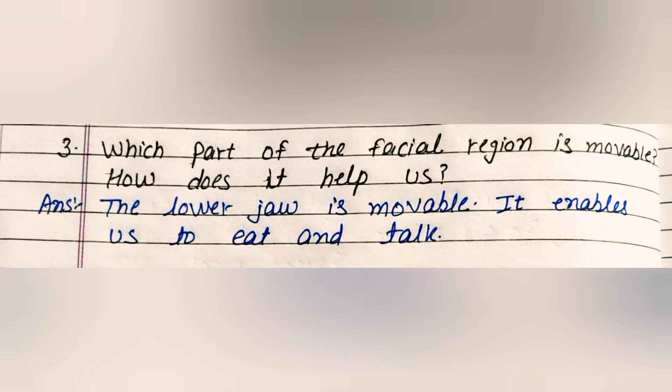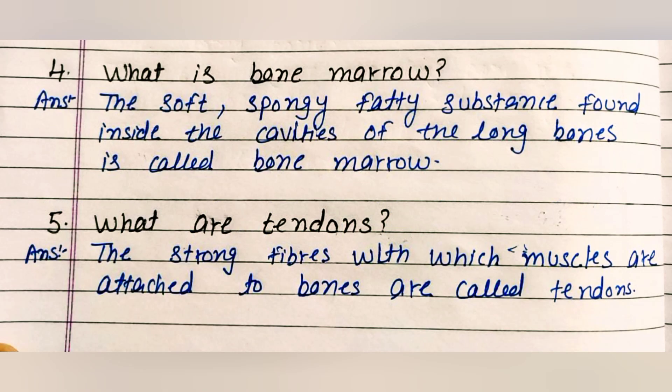Question three: Which part of the facial region is movable and how does it help us? The lower jaw is movable; it enables us to eat and talk. Question four: What is bone marrow? The soft, spongy, fatty substance found inside the cavities of the long bones is called bone marrow. Question five: What are tendons? The strong fibers with which muscles are attached to bones are called tendons.